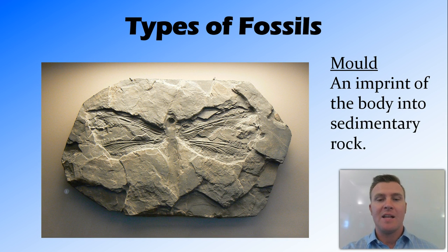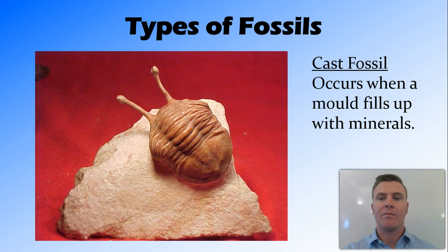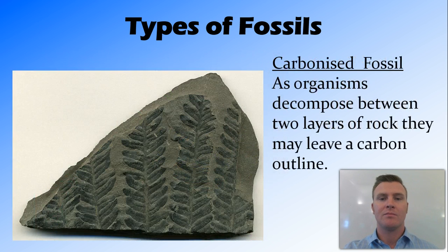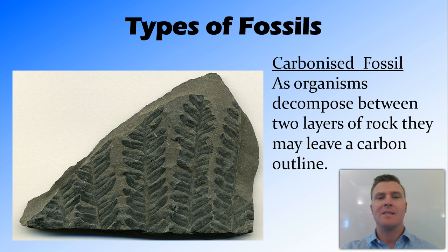They can also form a mold, which is an imprint of the body. From this imprint, a cast can be made. A cast occurs when that mold fills up with minerals — water washes whatever's inside away, then mineral-rich water comes in and those minerals crystallize inside the mold, giving us a cast fossil. A carbonized fossil occurs when an organism decomposes between layers of rock, leaving a black outline, which occurs quite often with plants and fish.